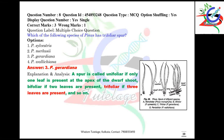Question number eight: which species of Pinus has trifoliar spurs? All examples from different species of Pinus are given here. It is a very critical question — you have to remember these things. Pinus gerardiana has trifoliar spurs. Apart from this, unifoliar, bifoliar, trifoliar, and multifoliar leaf traces are found in different species of Pinus, all given here with diagrams.